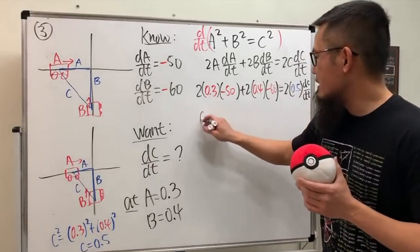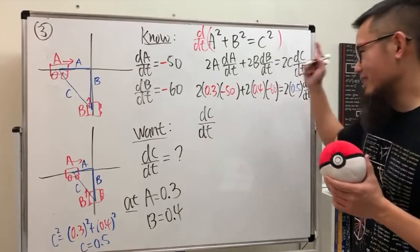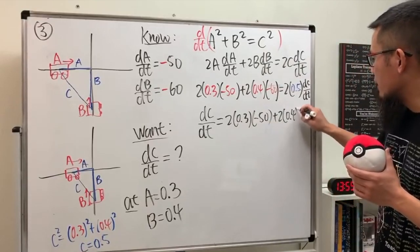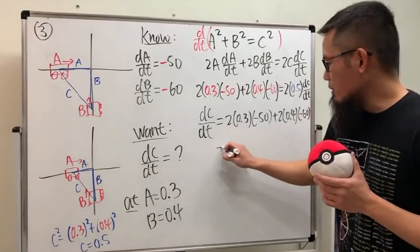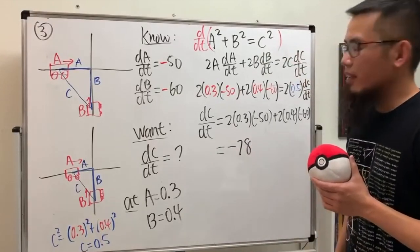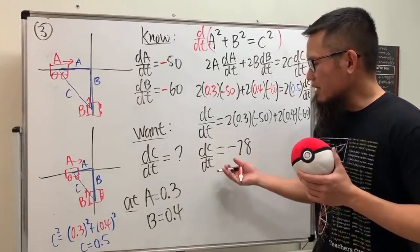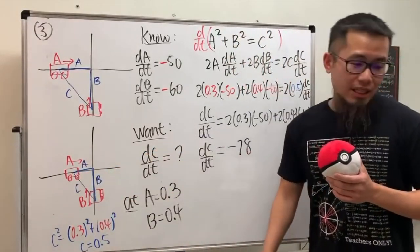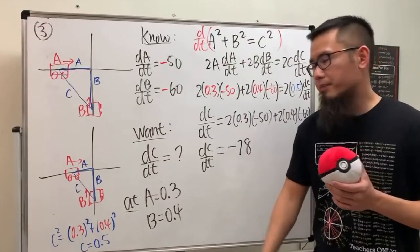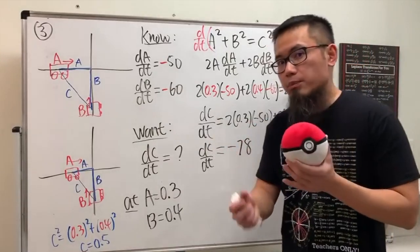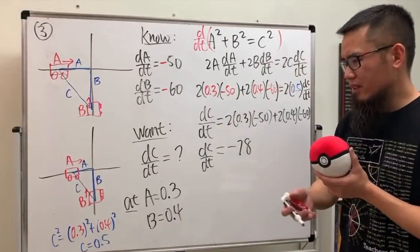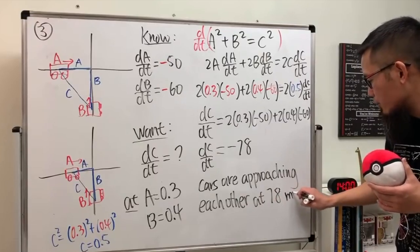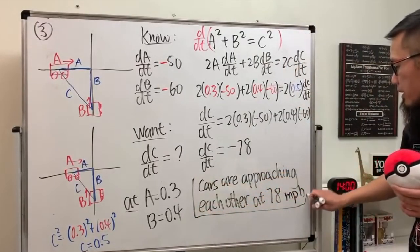Computing: 2(0.3)(-50) + 2(0.4)(-60) = -30 + (-48) = -78. So dc/dt = -78. The answer is negative because c is getting shorter and shorter. The word 'approaching' already implies the distance is decreasing, so the cars are approaching each other at 78 miles per hour.